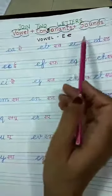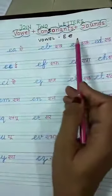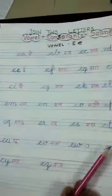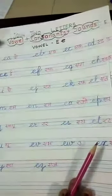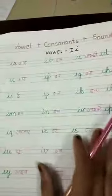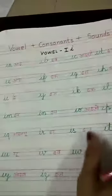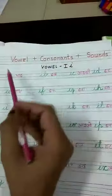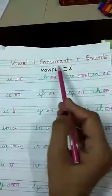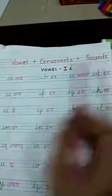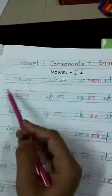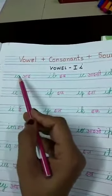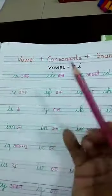These are vowel E plus consonant and vowel, and these are the sounds. Now, vowel I — we read vowel I with vowel and consonant.